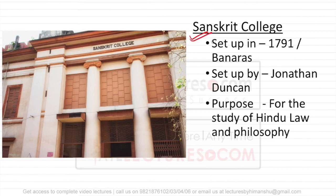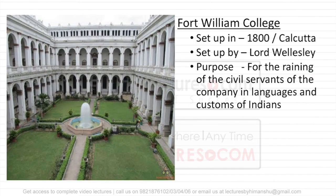The second institution was Sanskrit College, established in 1791 at Banaras by Jonathan Duncan. While the Calcutta Madarsa focused on Muslim law, here the purpose was Hindu law and Hindu philosophy. Then the next one established was Fort William College, in 1800 AD at Calcutta, again set up by Lord Wellesley. The purpose was mainly for the training of civil servants — it was like a production factory for civil servants, where they were taught different languages and customs to deal with different communities and populations.